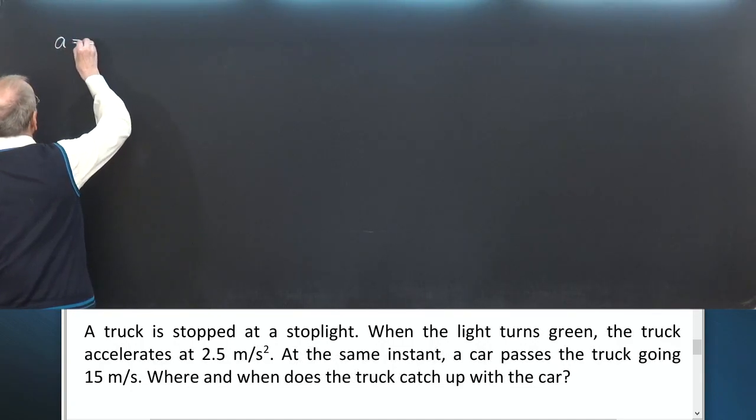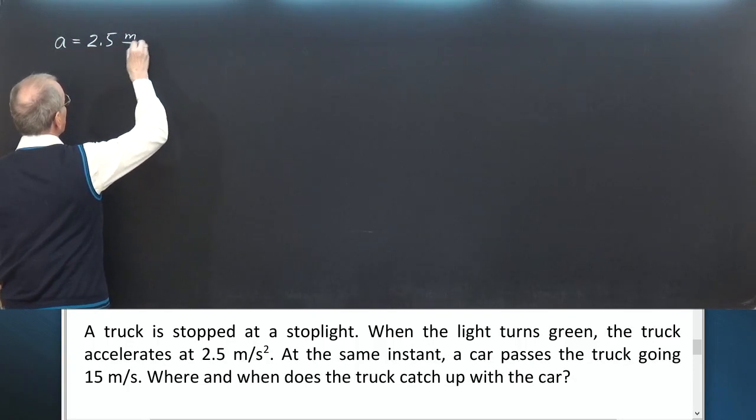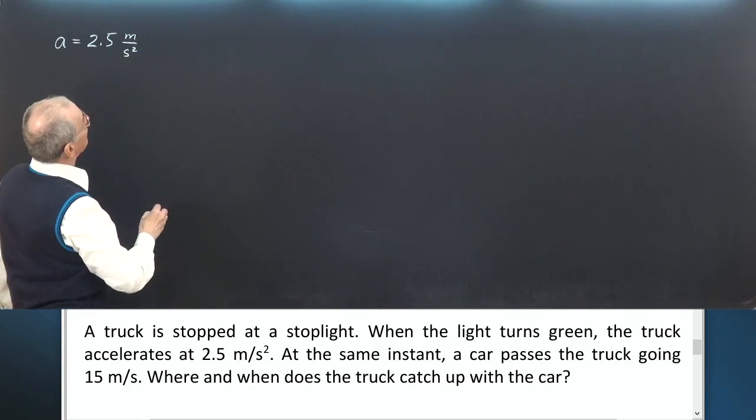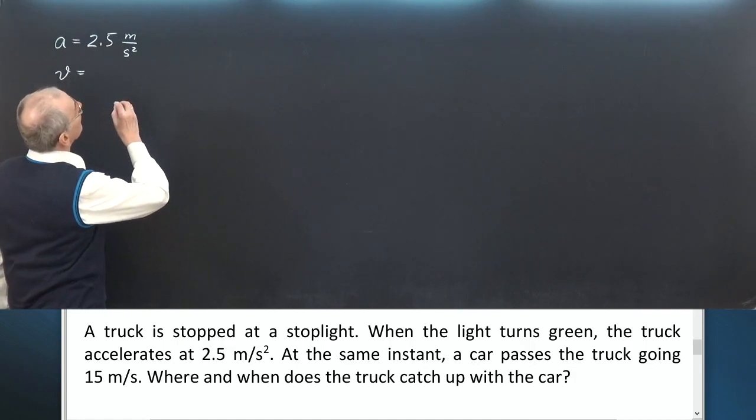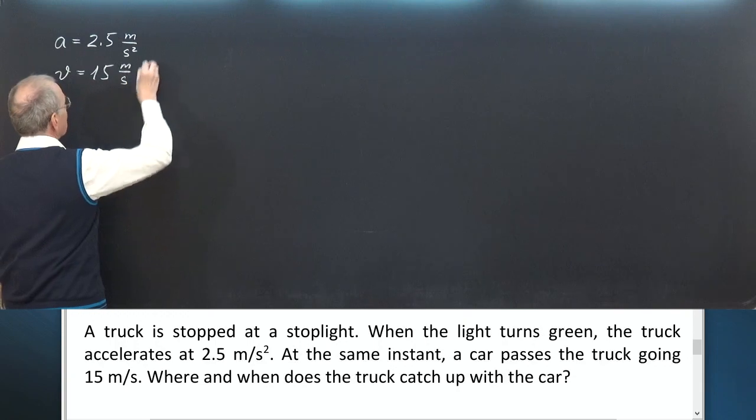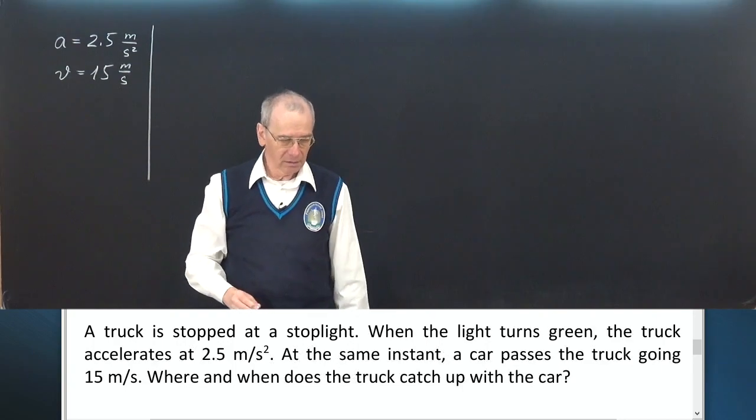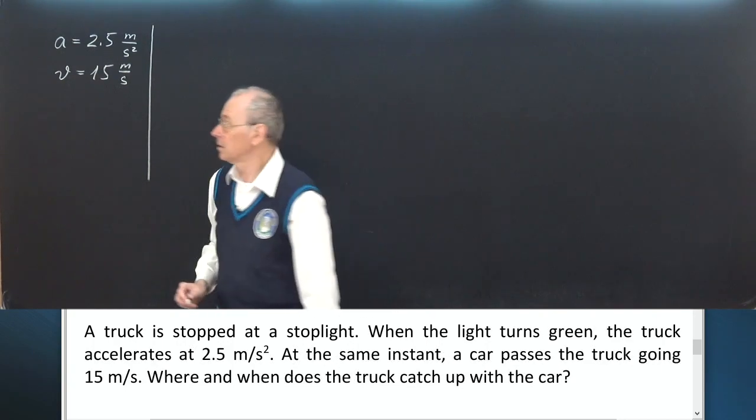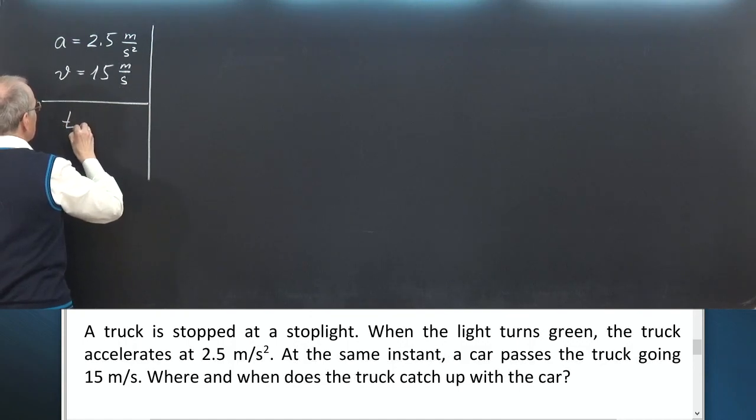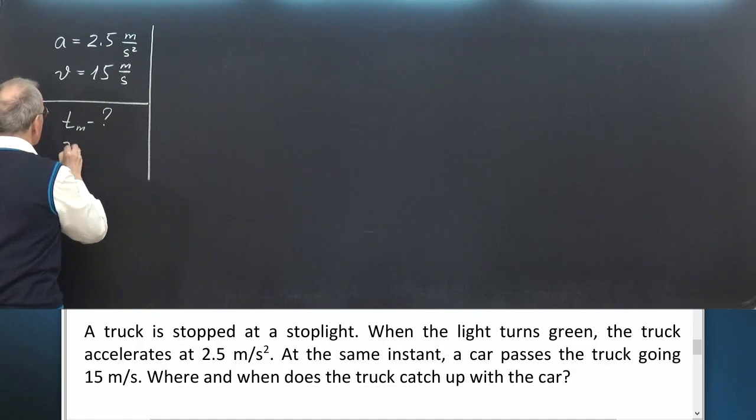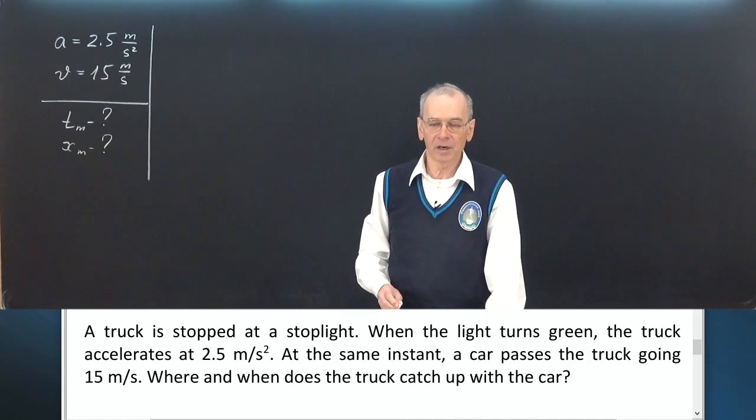Let A stand for acceleration of the truck, 2.5 meters per second squared. Let V be the speed of the car, 15 meters per second. Where and when does the truck catch up with the car? This event we call the meeting. T meeting when, X meeting where the truck catches up with the car.